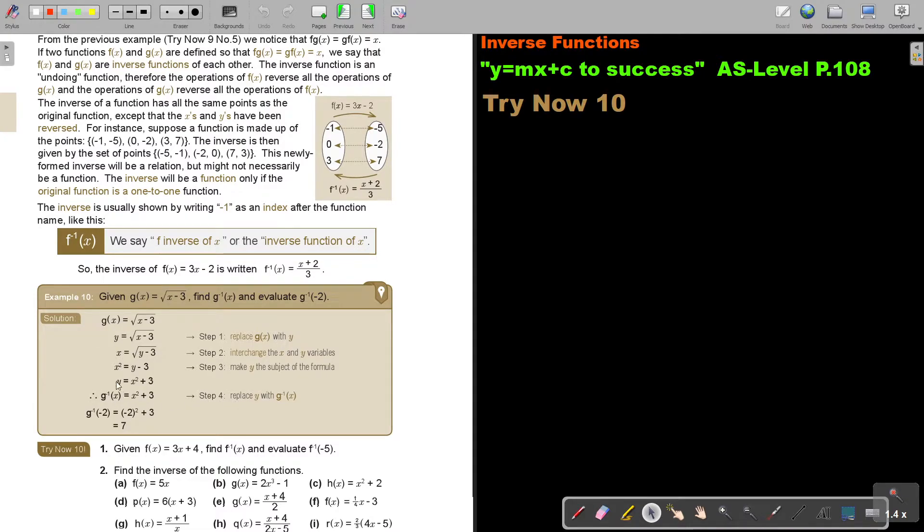So, the new Y must be replaced by G to the power negative 1 of X, meaning the inverse function of X, or G inverse of X. And then, I just substitute, and I just get 7. I think I'm not going to give you only one. We also did it in ordinary level. But, if you still struggle with it, really do this whole try now 10.